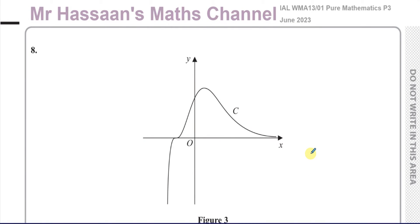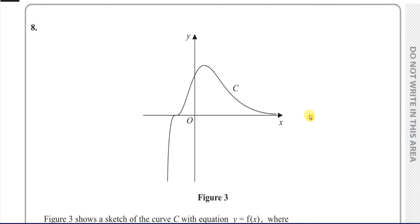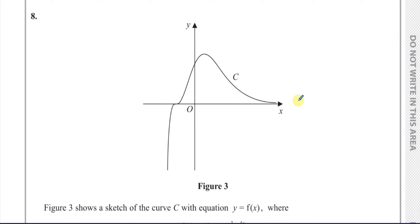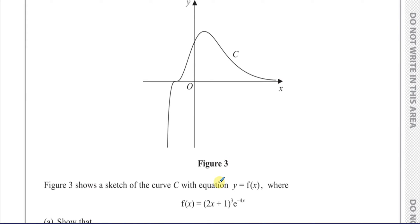Welcome back. This is Mr. Hassan's maths channel. I'm now answering question number eight from the June 2023 Pure Mathematics P3 International A-Level at Edexcel paper. This question is about the sketch of a curve C which has equation y equals f of x, where f of x is equal to 2x plus 1 cubed times e to the power of negative 4x.